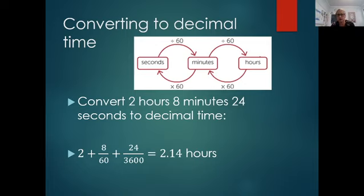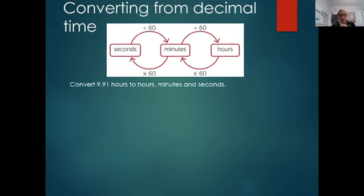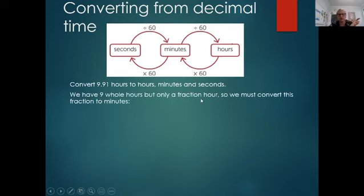I really think you need to write this all down once you've finished listening to me. Okay, the next way is the opposite. So now you've got 9.91 hours, and they want it in hours, minutes, and seconds. Okay, so first of all, you know you've got nine whole hours, but you've only got a fraction of hours. So we've got to convert the fraction to minutes, and we do the opposite.